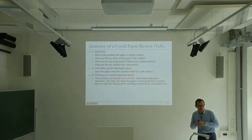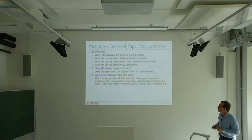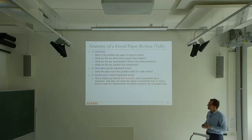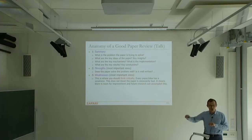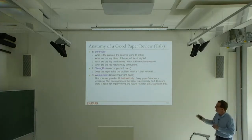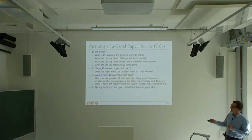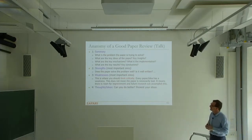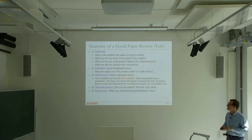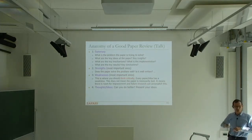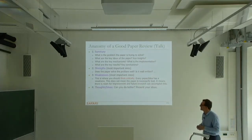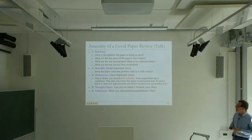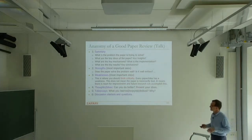I can give you only examples I've been exposed to, but this is very important to do in your own paper reviews. Another fair criticism could be: the cost of the mechanism is not completely properly evaluated. That's also an easier weakness to find. This is an even more interesting part: thoughts and ideas. Can you do better? Do you have any ideas building on the paper? It may not always be possible, but it's good to put your thoughts. The last part is takeaways — what you learned, enjoyed, disliked, and why.